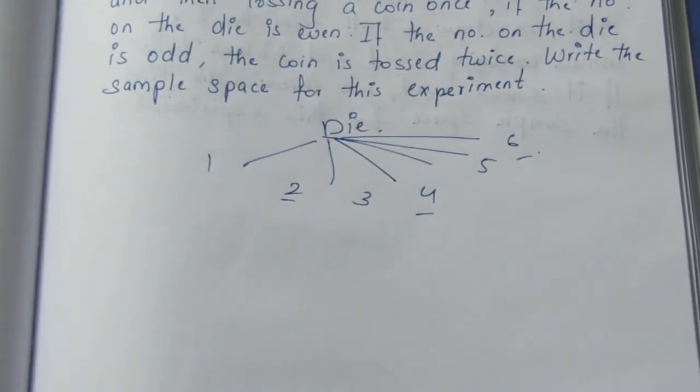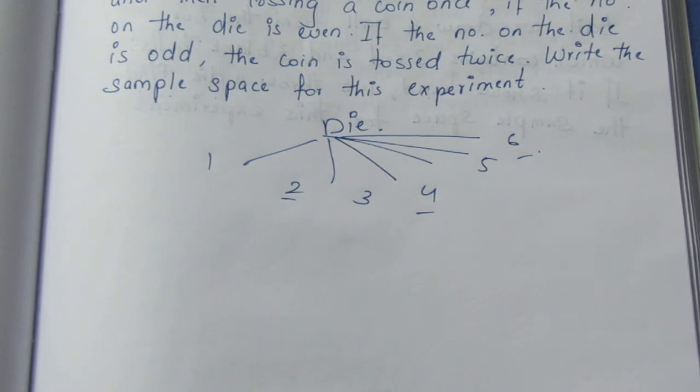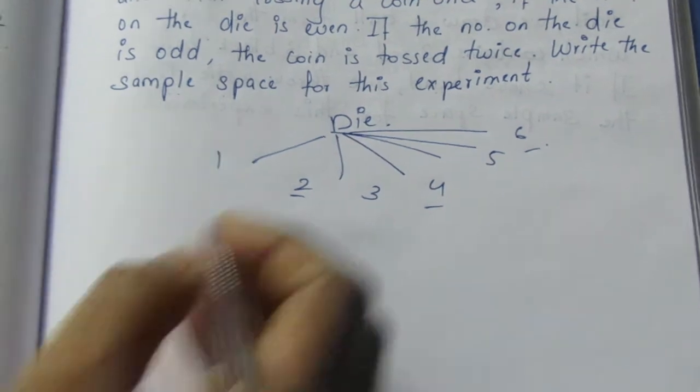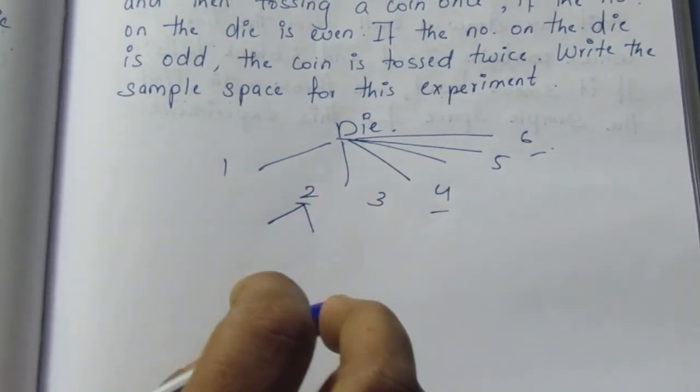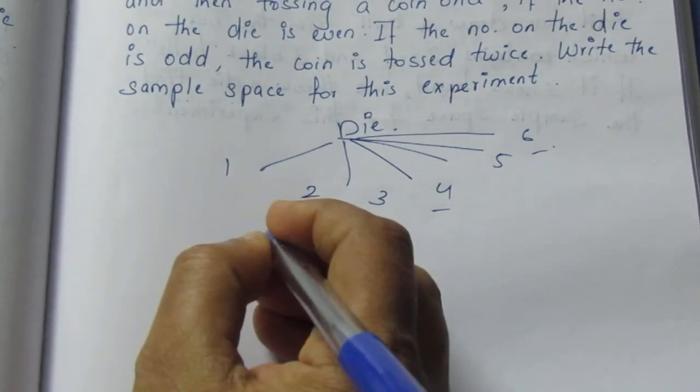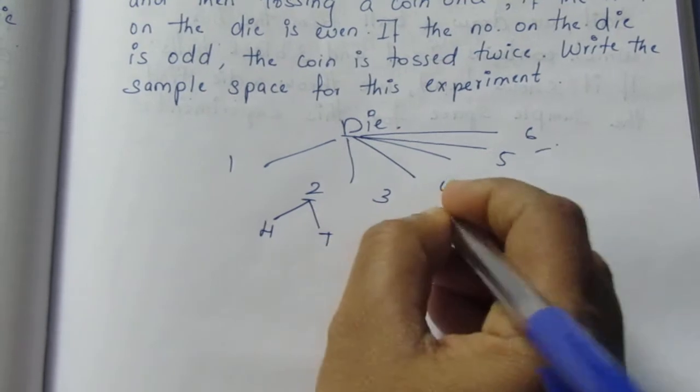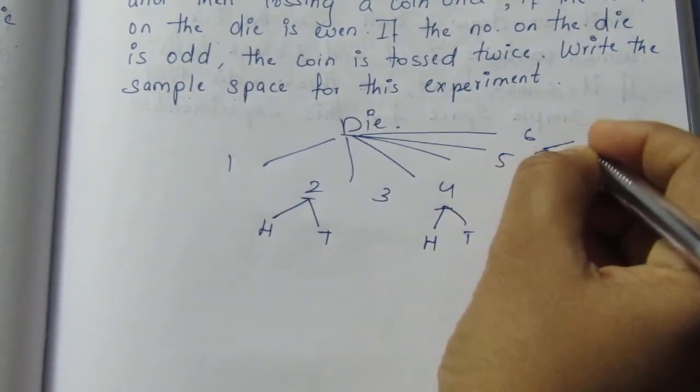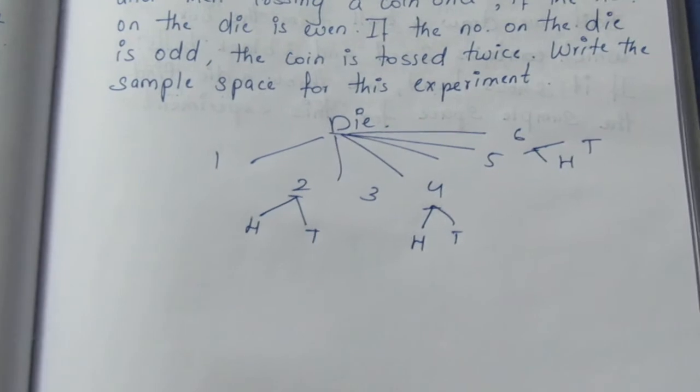What do you do? What do you say? A coin is tossed once. A coin tossed once.